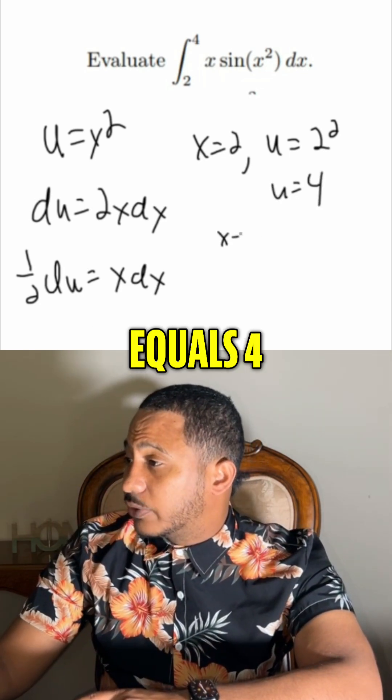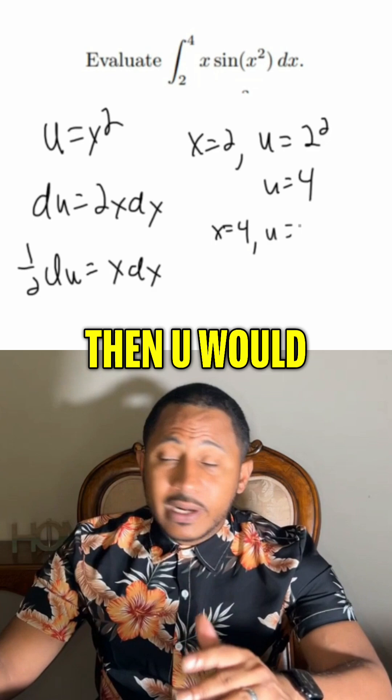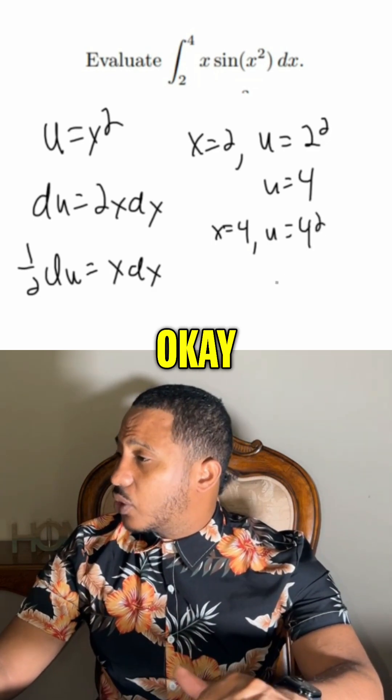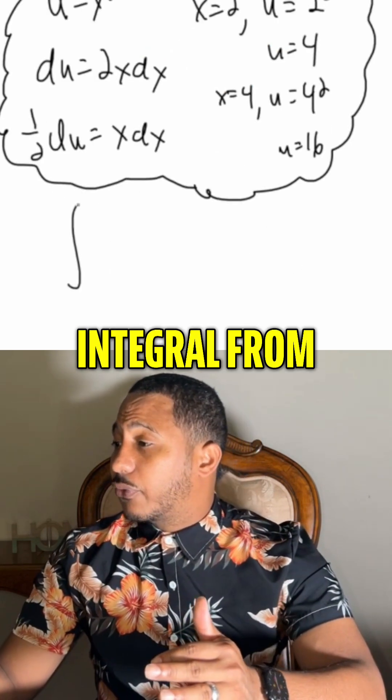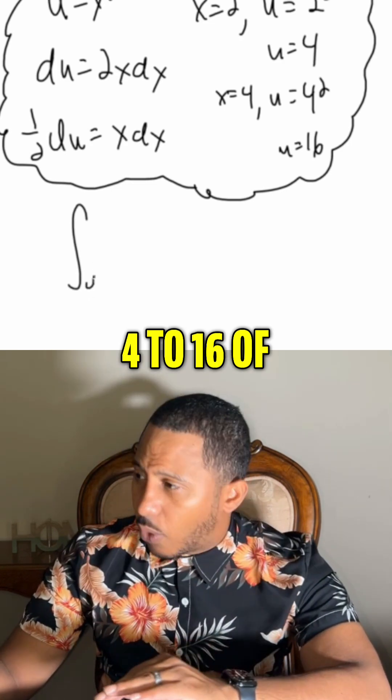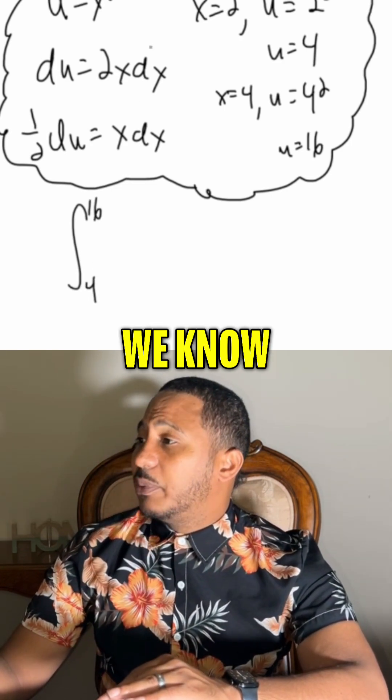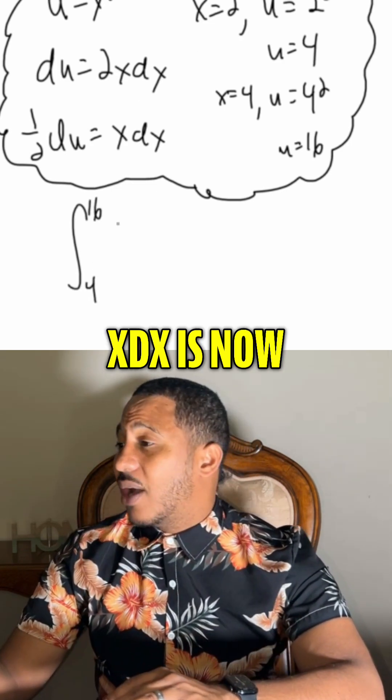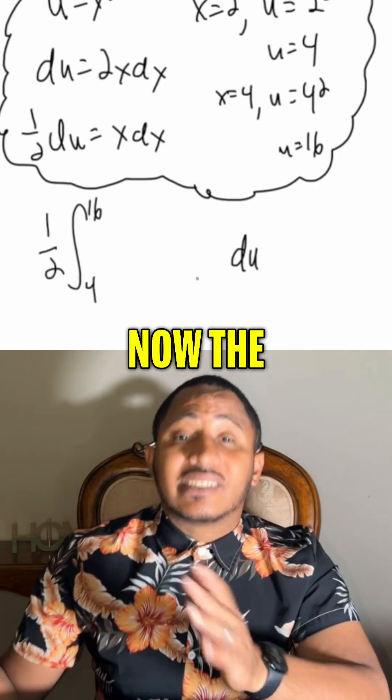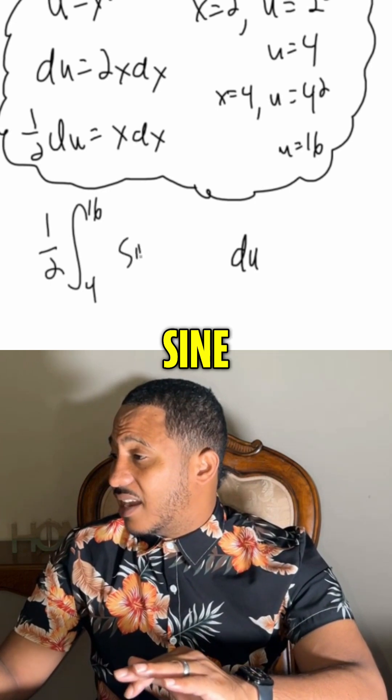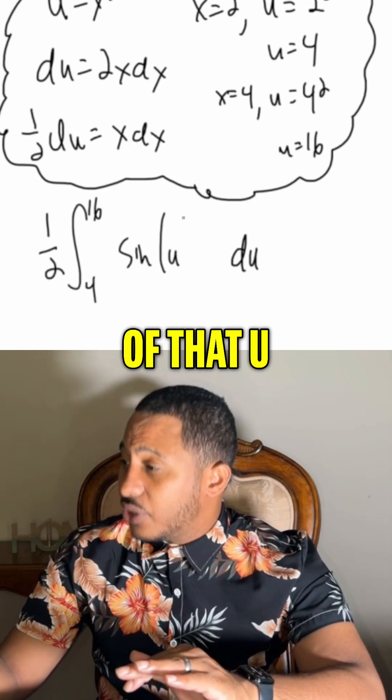Then when x equals 4, then u would equal that same 4 squared. So u would equal 16. So we know this is now the integral from 4 to 16 of, we know that the x dx is now half of du. And then now the sine of x squared is just the sine of that u.